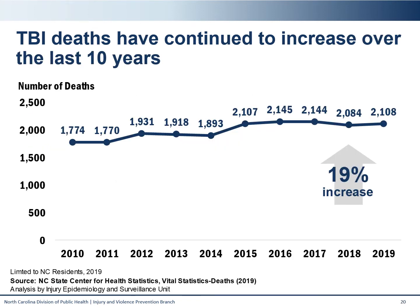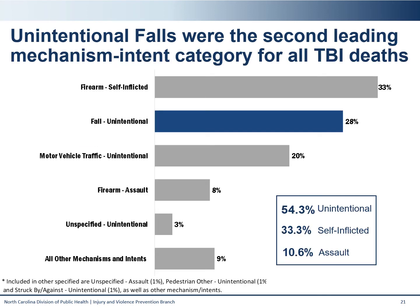TBI deaths have continued to increase over the last 10 years. This trend represents a 19% increase in the count of TBI deaths, going from just shy of 1,800 a year in 2010 to now over 2,100 deaths a year in 2019. Mechanism and intent are important to understanding the cause of injury. Mechanism describes the source of the injury, while intent describes whether the injury was inflicted purposefully and whether it was by another person or self-inflicted. Unintentional falls are the second leading cause of all TBI deaths, making up 28%. Self-inflicted firearm injuries accounted for the largest proportion at 33% of TBI deaths. Motor vehicle traffic-related incidents are the third most common mechanism, accounting for 20% of TBI deaths.